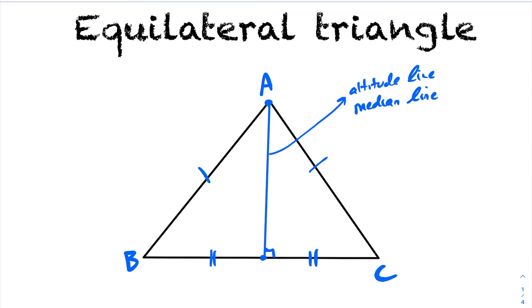Not only is it a median line, it is also a perpendicular bisector, because it goes from the midpoint of line segment BC to the opposite side. It just so happens to cut through the vertex. The definition of a perpendicular bisector of line segment BC is a line that's perpendicular to BC and crosses at the midpoint — it just happens to go through the vertex. So this line is an altitude line, a median line, and a perpendicular bisector.